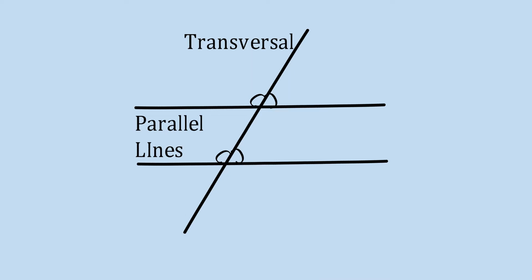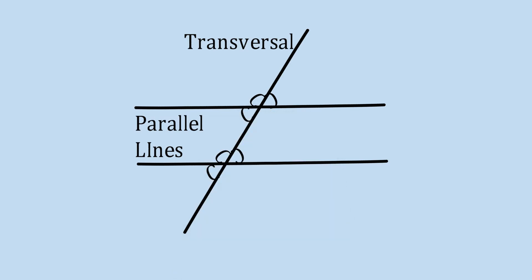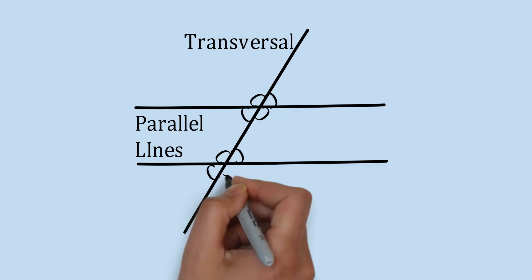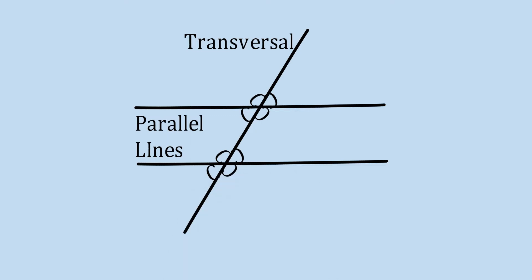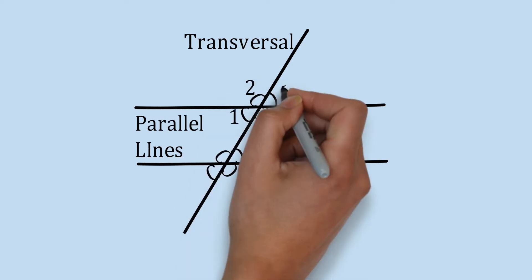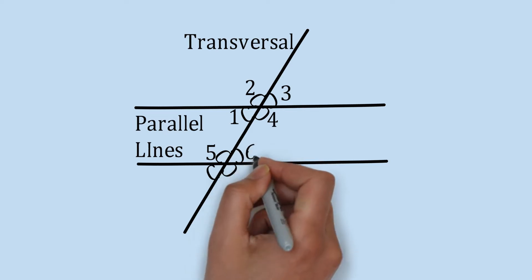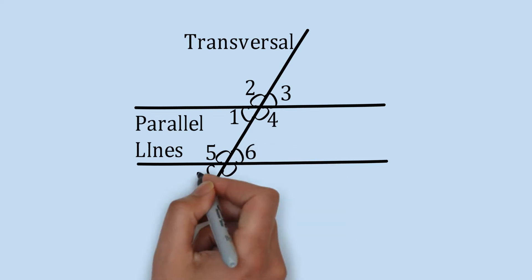These are the various angles that are being drawn in front of you. Let us label all these angles as 1, 2, 3, 4, 5, 6, 7, and 8.